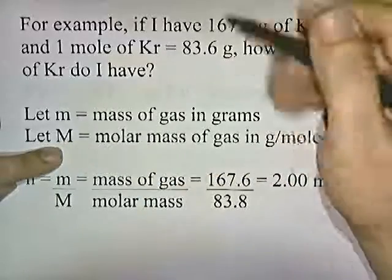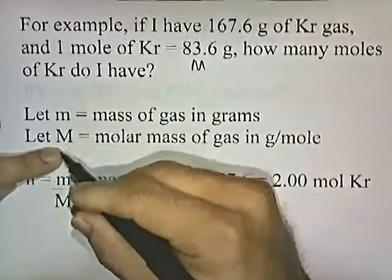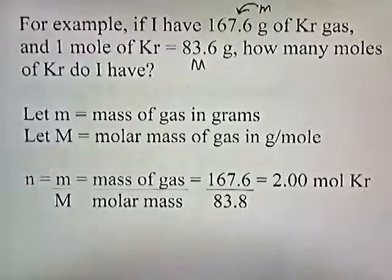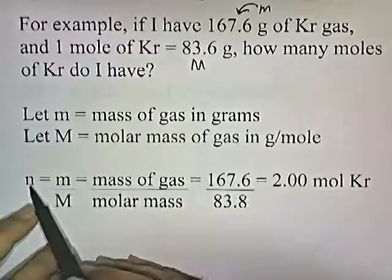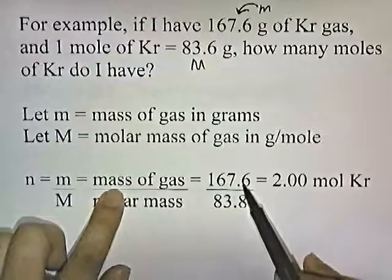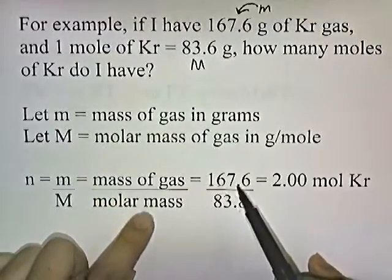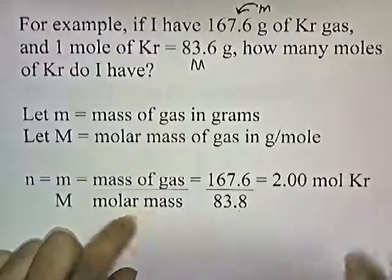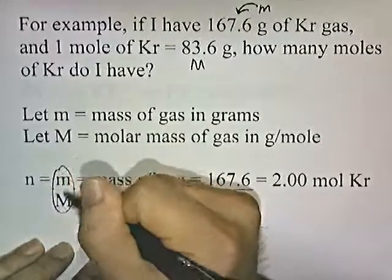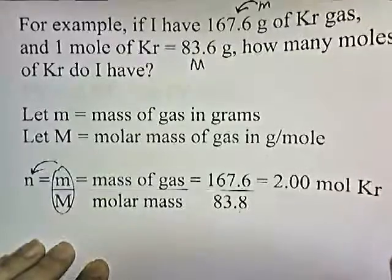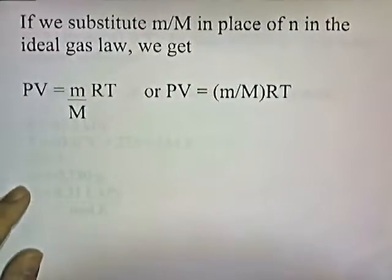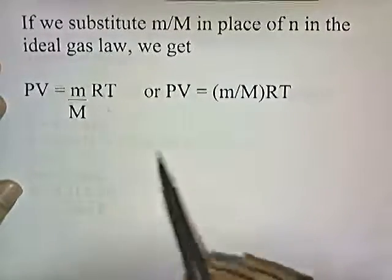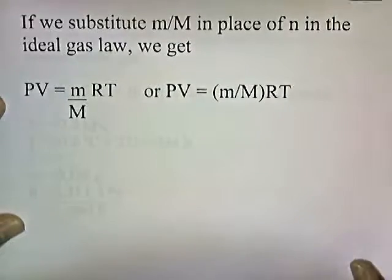This is capital M and this is little m. The number of moles of gas is the mass of gas, that's how many grams of gas we have, divided by how much one mole of the gas weighs. So 167.6 divided by 83.8 gives me two moles of krypton. We can substitute little m over big M in place of N. If we substitute little m over big M in place of N in the ideal gas law, we get PV equals little m over big M RT. Sometimes we write it like this.